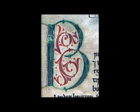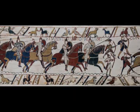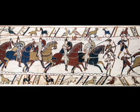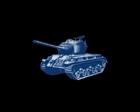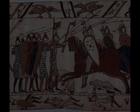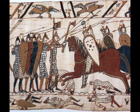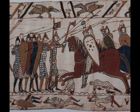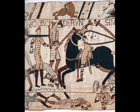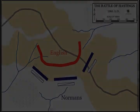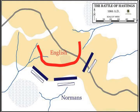Harold's exiled brother Tostig Godwinson raided southeastern England with a fleet he had recruited in Flanders, later joined by other ships from Orkney. Threatened by Harold's fleet, Tostig moved north and raided in East Anglia and Lincolnshire. He was driven back to his ships by the brothers Edwin, Earl of Mercia and Morcar, Earl of Northumbria. Deserted by most of his followers, he withdrew to Scotland, where he spent the middle of the year recruiting fresh forces. Hardrada invaded northern England in early September, leading a fleet of more than 300 ships carrying perhaps 15,000 men. Hardrada's army was further augmented by the forces of Tostig, who supported the Norwegian king's bid for the throne. Advancing on York, the Norwegians occupied the city after defeating a northern English army under Edwin and Morcar on the 20th of September at the Battle of Fulford.